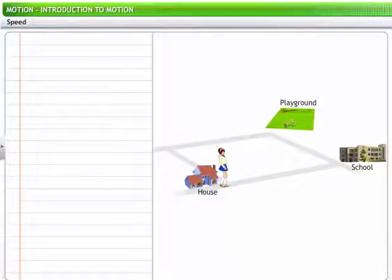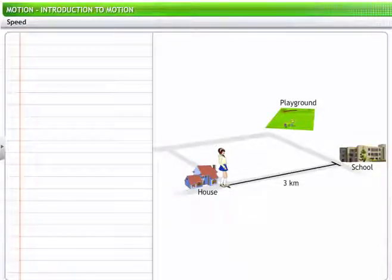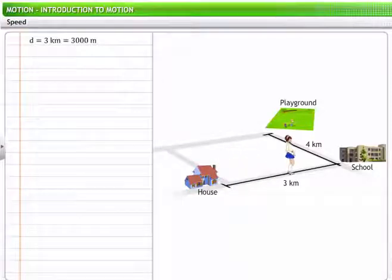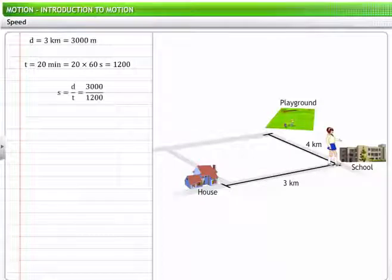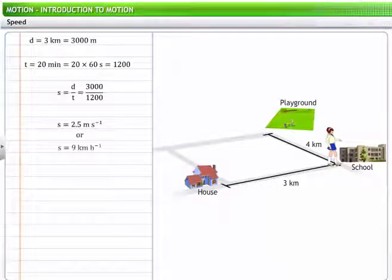Let's try applying this formula to one of the situations we reviewed earlier. In our previous example, Mary's school is 3 kilometers away from her home and the playground is 4 kilometers away from the school. If Mary walks to school from home in 20 minutes, her speed can be calculated as 3000 divided by 1200, which is 2.5 meters per second or 9 kilometers per hour.